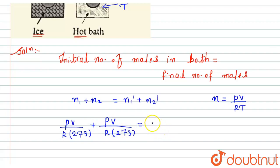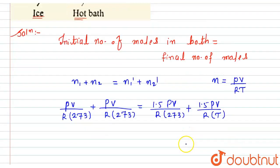This should equal to the final moles of gas, that is 1.5 times of PV divided by R into T₀ that is 273, plus 1.5 times of PV divided by R into T, because we have to find here the temperature for the hot bath. Now if you simplify this...